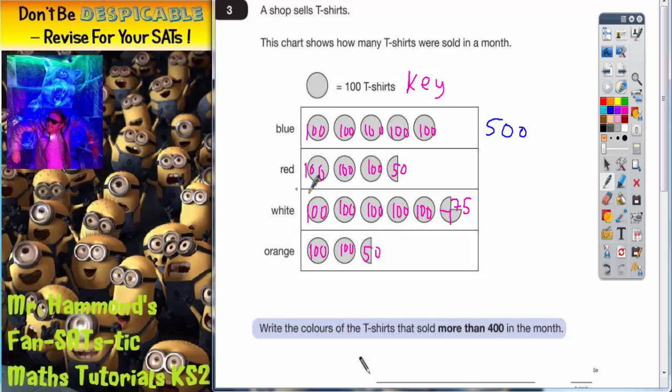So blue t-shirts is 100, 200, 300, 400, 500. Red t-shirts is 100, 200, 300 plus the 50 is 350. White is 100, 200, 300, 400, 500 plus the 75 is 575. And orange is 100, 200 plus the 50 is 250.